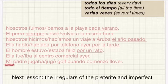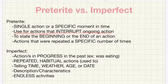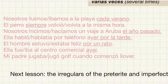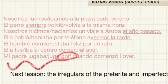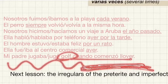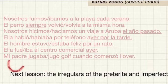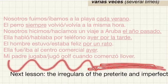And lastly, the preterite is going to be used for actions that interrupt the ongoing action. In this example, my dad playing golf is the ongoing action, and when it started to rain, that is the preterite — comenzó. So in front of it you would use the imperfect tense. My dad was playing golf when the rain started — so in this case, you would use jugaba.